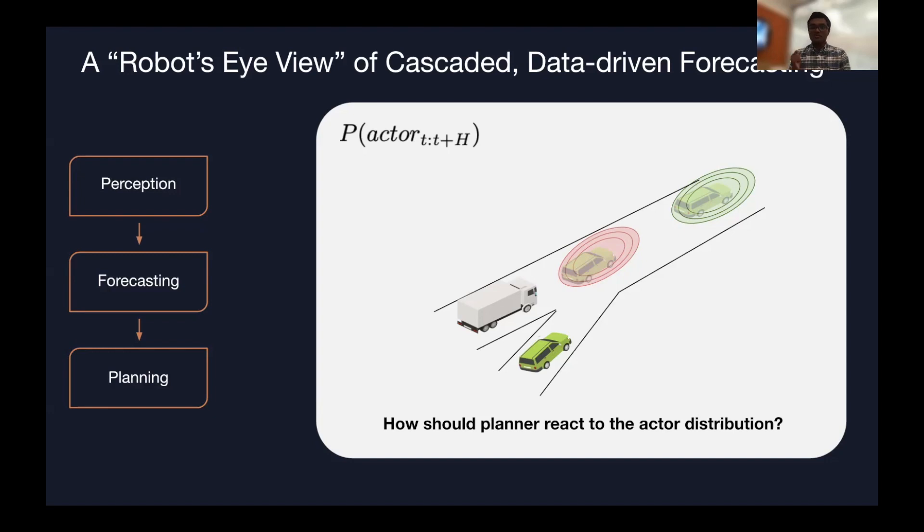Here we've shown the distribution of p(actor_t:t+H), which is the marginal distribution of the actor's distribution given the state of the world. However, at training time, our data was never collected from asking this question. Our data instead was collected as the vehicle drove, so we drove the truck in manual or even in autonomy, and collected a bunch of data of other actors around us, and then used that to fit a model of p(actor).